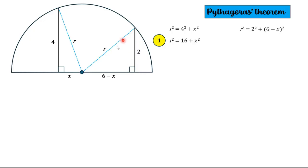For this triangle here, we have the radius squared is equal to 2 squared plus 6 minus x all squared, and we can simplify this to r squared equals 4 and we can also expand the bracket to 36 minus 12x plus x squared.